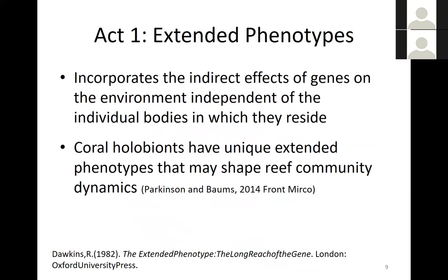Some infectious disease outbreaks have caused large-scale population declines of corals. Some members might be mutualists under certain conditions, but if the environment changes, they may end up being more like parasites. So what is an extended phenotype? In the first half, I'm going to concentrate on the Symbiodinium. This idea of an extended phenotype was put forward by Dawkins in 1982 — the indirect effects of genes on the environment are independent of the individual bodies in which they reside. In 2014, John and I wrote a review applying this idea to coral biomes, suggesting that a coral biome has unique extended phenotypes that may shape reef community dynamics.